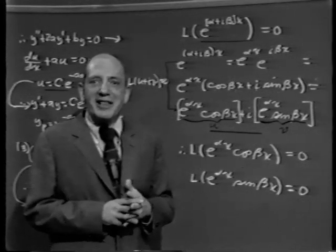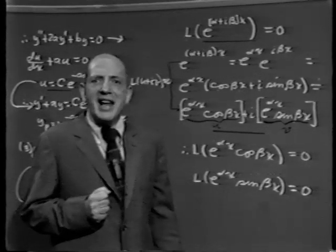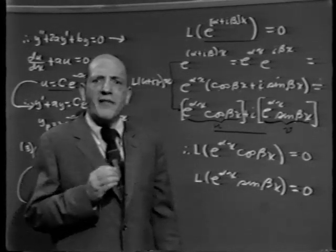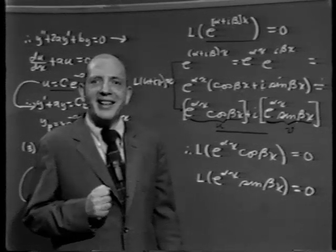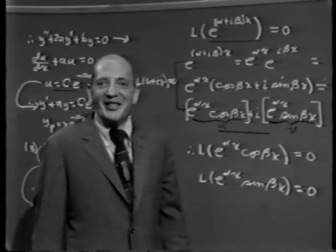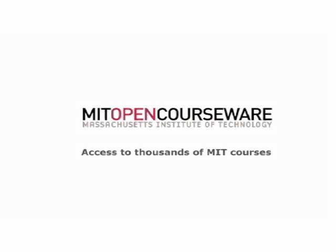That's all there is to this particular problem. The rest is left to the exercises. Next time, we'll tackle the companion part: how do you find the particular solution of a linear differential equation with constant coefficients where the right-hand side is not 0 — the non-homogeneous case. Until next time, goodbye. Funding for the publication of this video was provided by the Gabriella and Paul Rosenbaum Foundation. Help OCW continue to provide free and open access to MIT courses by making a donation at ocw.mit.edu/donate.